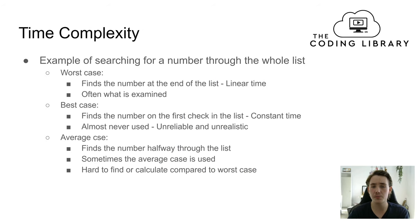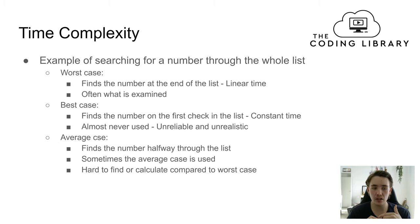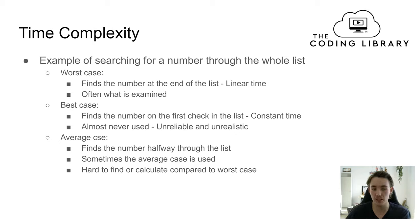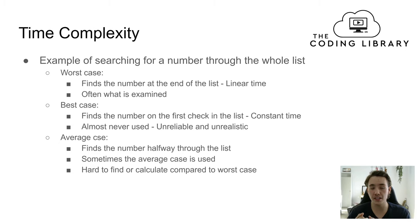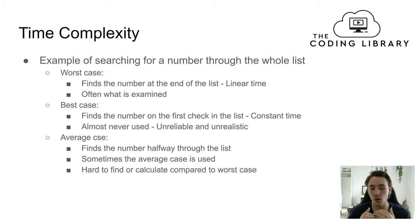When talking about time complexity, let's take an example where we're searching for a number in a list by going through the whole list in linear time. The worst case scenario here is that we find the number at the very end of the list — the last element. So the time complexity in the worst case is linear, because we have to search through the whole list, and it stays linear as we increase the number of elements.